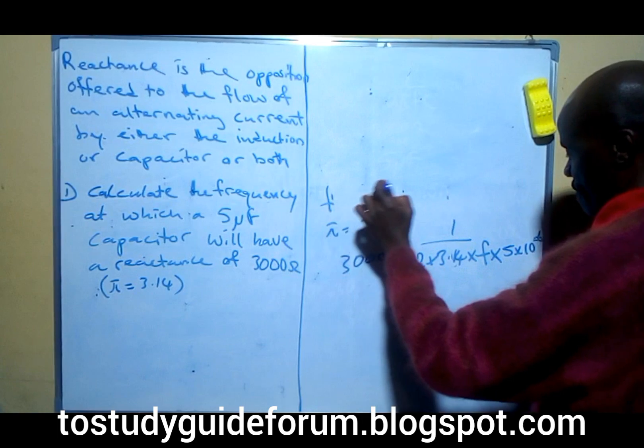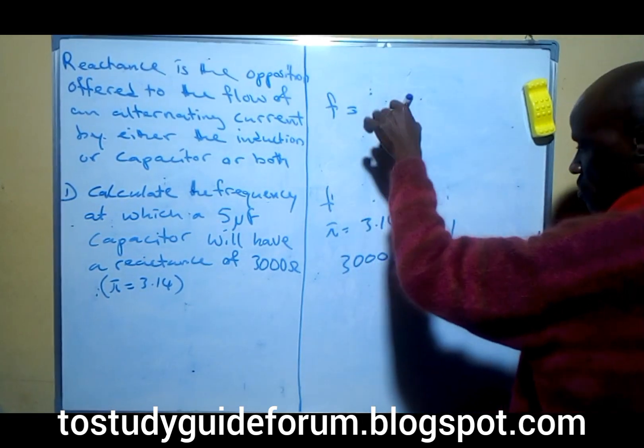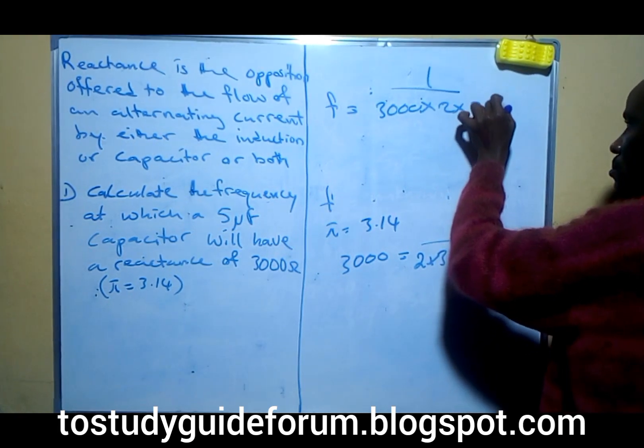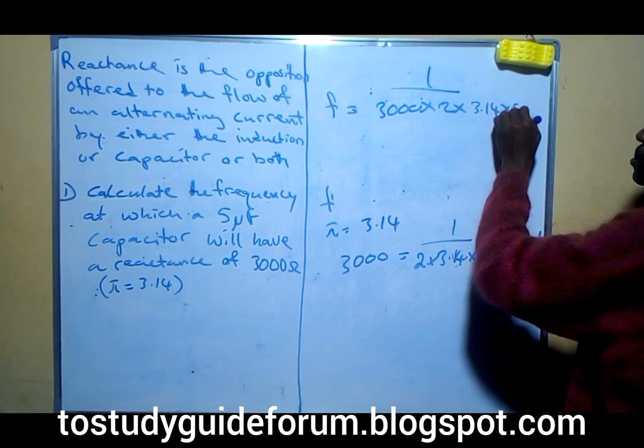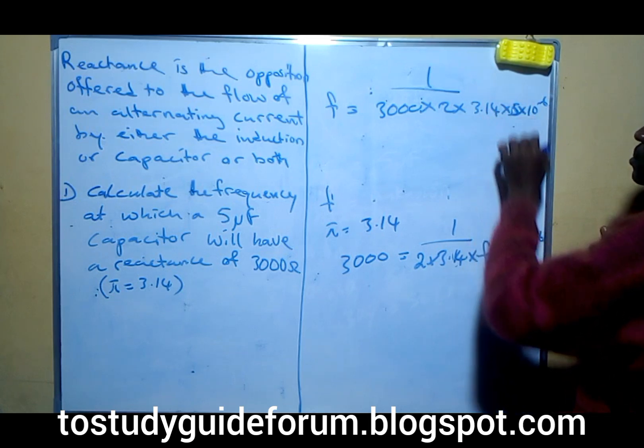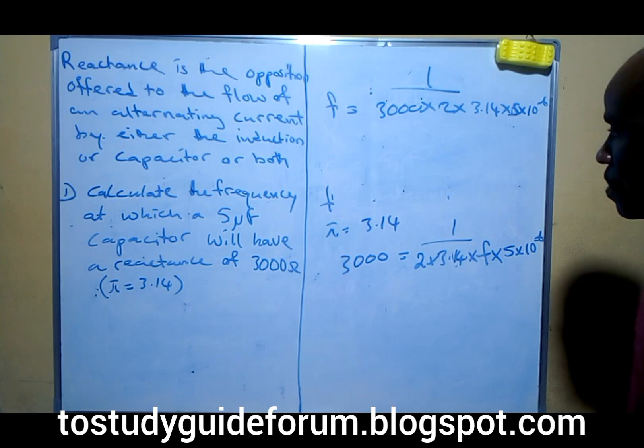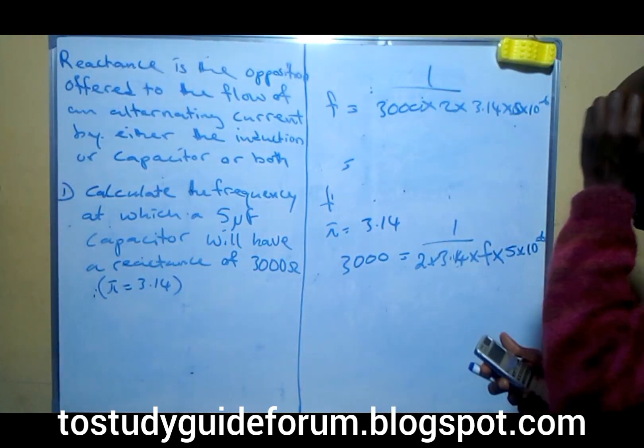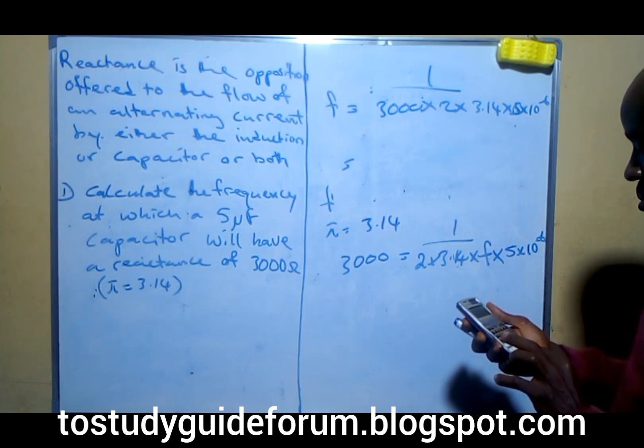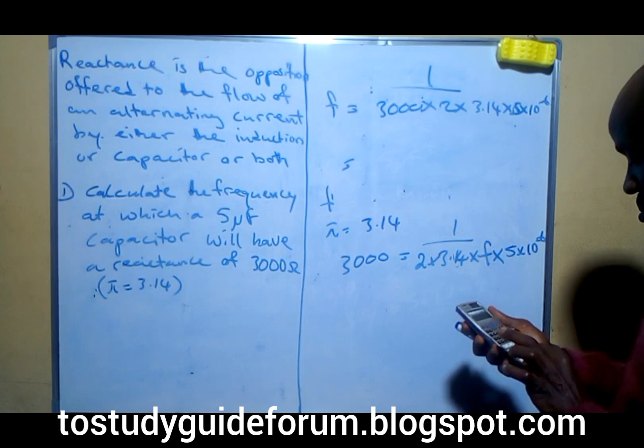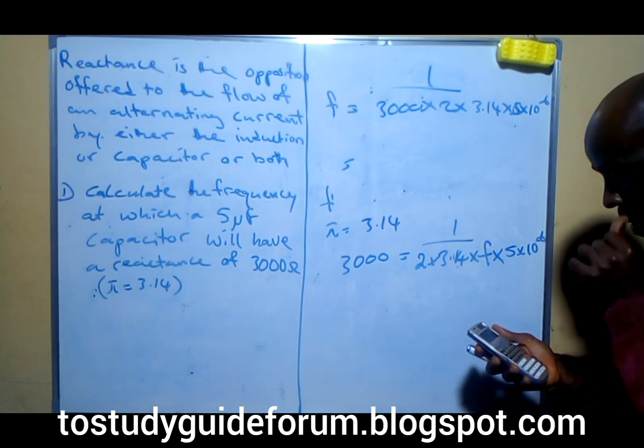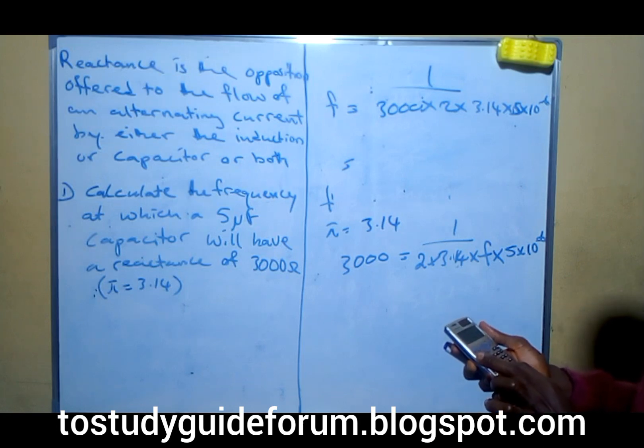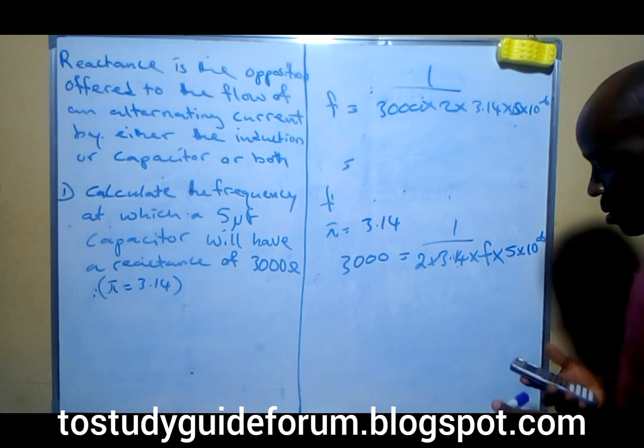cross multiply. We will have everything equal to 3000. So that would give us, that is equal to